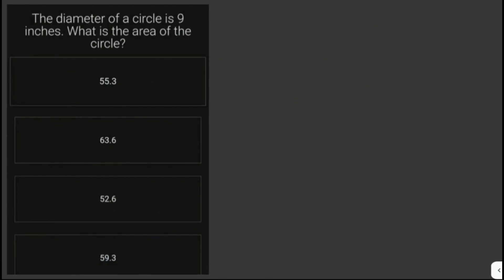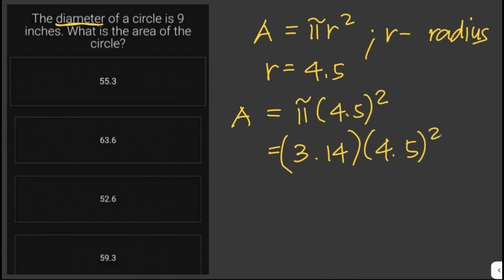The diameter of a circle is 9 inches. What is the area of the circle? So we're given here the diameter, and then the area is just equal to pi r squared, where r is the radius. So the radius is just half of the diameter. Therefore, the radius here is just equal to 4.5. Area is equal to pi times 4.5 squared, and pi is just equal to 3.14 times 4.5 squared. And this would give us 63.59. We don't have 63.59 in our choices here. Therefore, we round this off to 63.6.